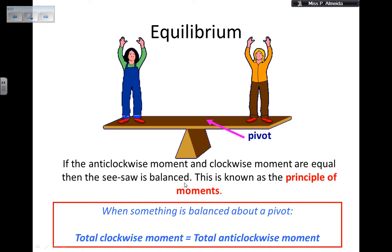If the anticlockwise moment and the clockwise moment are equal, then the seesaw, or whatever you have, is balanced. And as I told you, this is known as the principle of moments. And here it is, like the full definition in this rectangle. So when something is balanced about a pivot, the total clockwise moment equals the total anticlockwise moment.